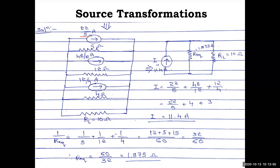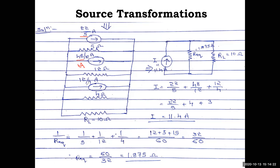For the second branch: 48 volts with 12 ohm gives 48/12 = 4 amps. The resistance value stays 12 ohm but comes in parallel. For the third branch: 12 volts with 4 ohm gives 12/4 = 3 amps, in parallel with 4 ohm. The 10 ohm load resistance RL is not changed.